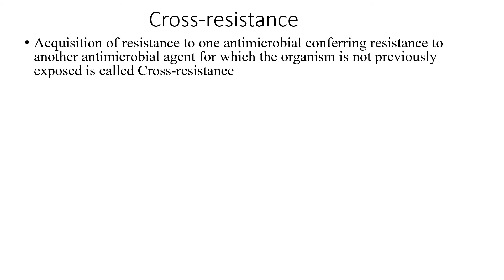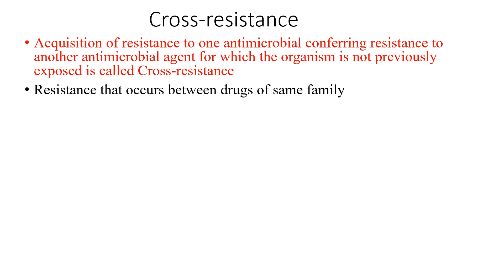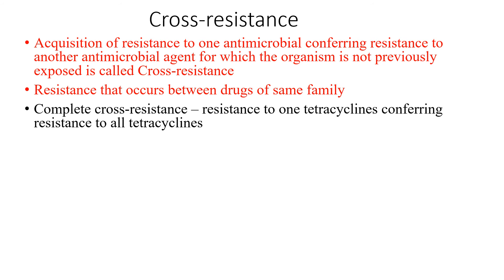Cross resistance means a bacterium becomes resistant to a drug to which it has not been directly exposed, because it is already resistant to another drug in the same class. Complete cross resistance means the microbe is resistant to all drugs in that family — for example, if resistant to tetracycline and oxytetracycline, it is also resistant to doxycycline and minocycline.